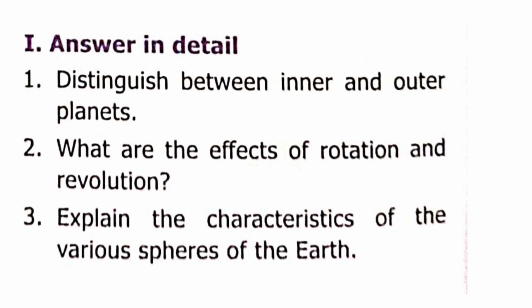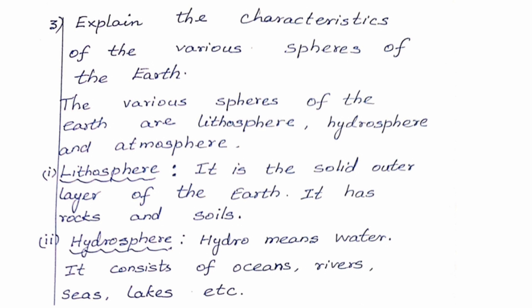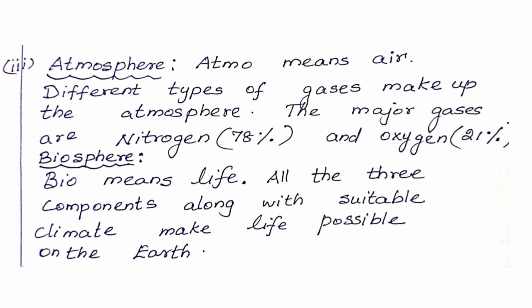Question 3: Characteristics of the various spheres of the Earth. Lithosphere is the solid outer layer of the Earth, consisting of rocks and soils. Hydrosphere consists of oceans, rivers, seas, and lakes. Atmosphere is composed of different gases — mainly Nitrogen (78%) and Oxygen (21%). Biosphere: all three components together with suitable climate make life possible on Earth.